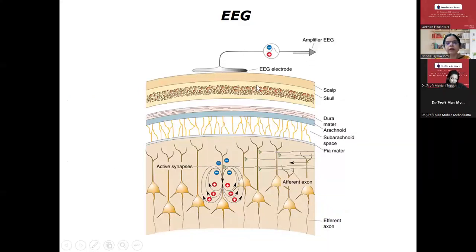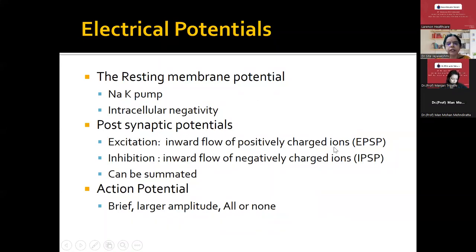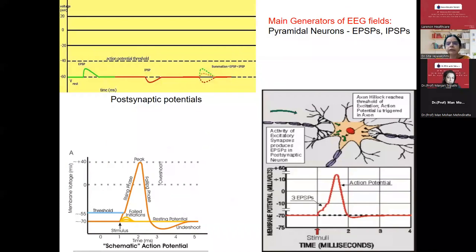If you look at an electrode placed on the surface of the scalp — what are we recording? There are electrical potentials generated beneath the electrodes. The most important three are: the resting membrane potential of the neuron, mediated by the sodium-potassium pump and mostly intracellularly negative; the postsynaptic potentials — either excitatory (EPSP) or inhibitory (IPSP), which are summated during EEG recording; and action potentials from neurons, which are brief and larger in amplitude with an all-or-none phenomenon. The main generator of EEG fields is the summation of EPSPs and IPSPs from pyramidal neurons.